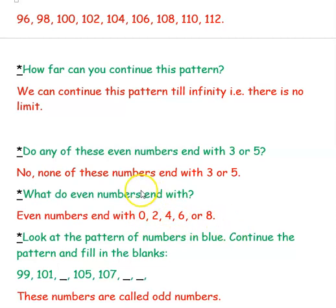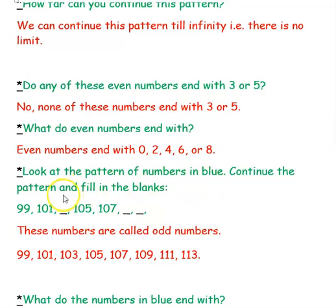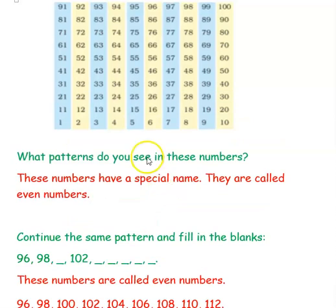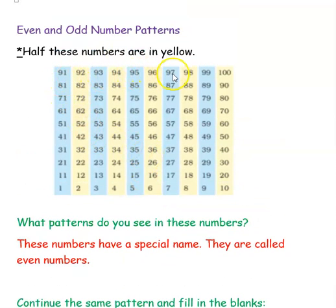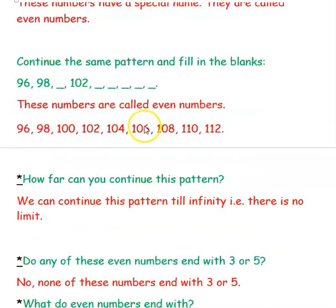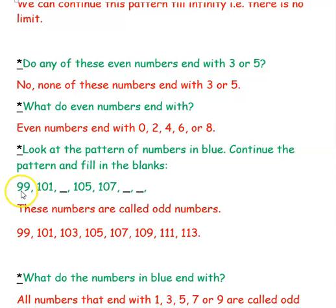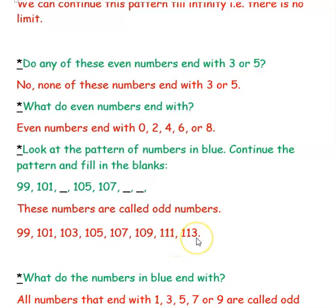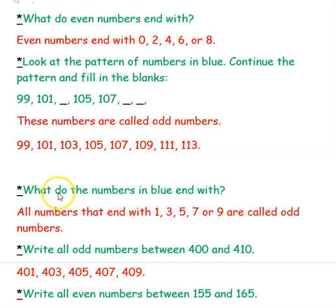Now look at the pattern of numbers in blue — these end with 1, 3, 5, 7, and 9. These are called odd numbers. Continuing the pattern: 99, 101, 103, 105, 107, 109, 111. The numbers in blue end with 1, 3, 5, 7, or 9 — they are called odd numbers.